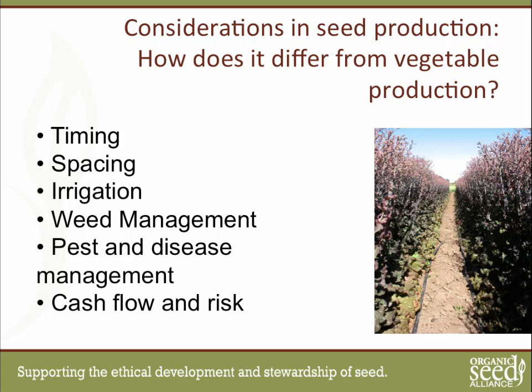There are a few different aspects when we think about how seed growing differs from vegetable growing. When it comes to timing, the first and most obvious is just the length of time. For some crops — obviously a fruiting crop like winter squash — it's going to be relatively similar whether you're growing it for seed or for market. But for things we grow vegetatively, like lettuce or cabbage, there's a whole other part of the life cycle the plants have to go through.